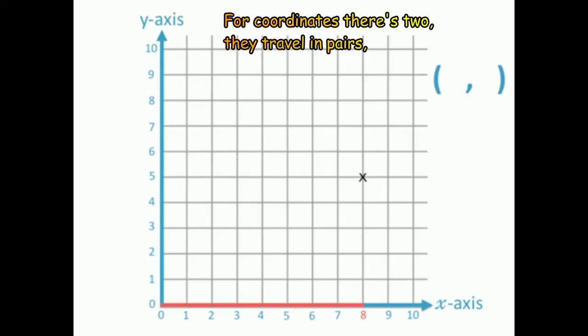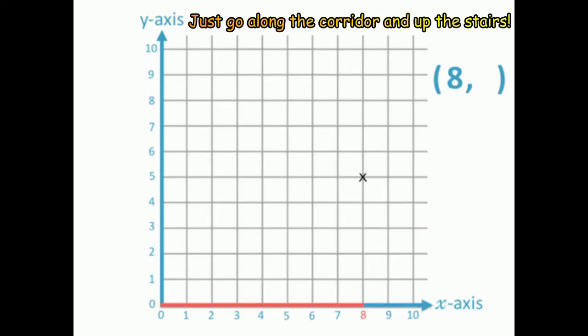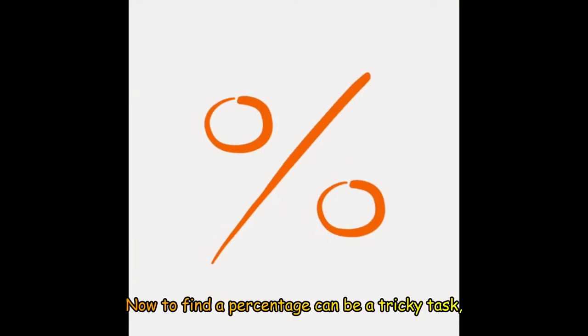Now before we go and get on to the units and measure, let's cover coordinates — the key to the treasure. For coordinates there's two, they travel in pairs. Just go along the corridor and up the stairs.